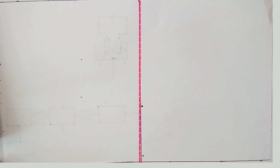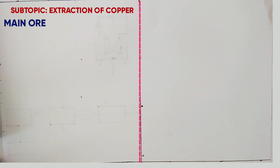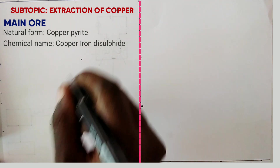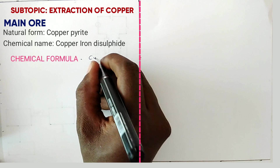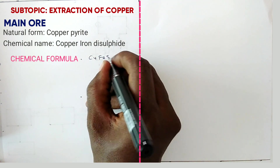Welcome learners. Today I want to look at the extraction of metals, particularly extraction of copper. The main ore for extraction of copper, which in natural form is called copper pyrites, has the chemical name copper iron disulfide. The chemical formula is CuFeS2.